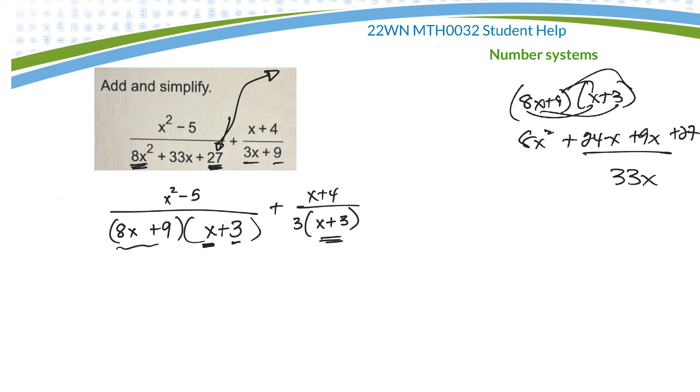All right. So now I've got the denominators. And so I need to find the lowest common denominator. And it has to include every factor the most number of times that it occurs. So in this one here, I've got an 8x plus 9 and an x plus 3.